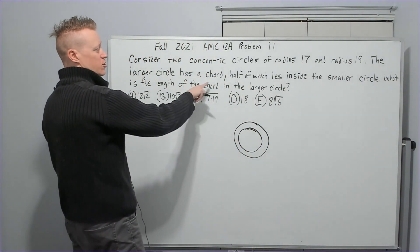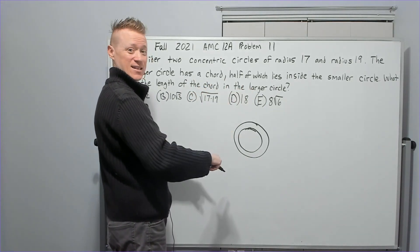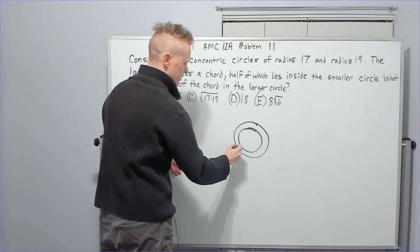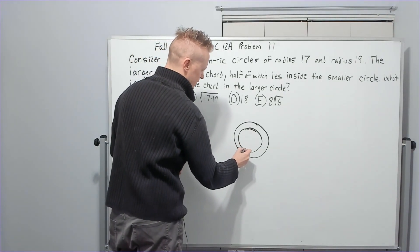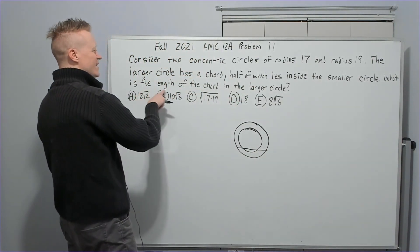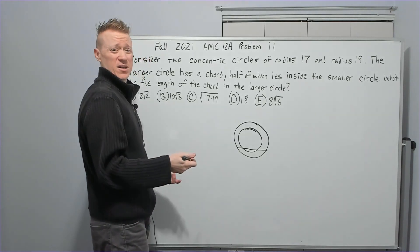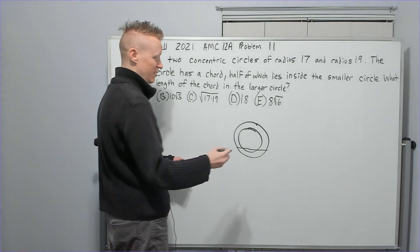The larger circle has a chord, half of which lies inside the smaller circle. Okay, so we're probably drawing about here or so. What is the length of the chord in the larger circle? You don't get a lot of information to work with, but it's got to be enough or it wouldn't be solvable.